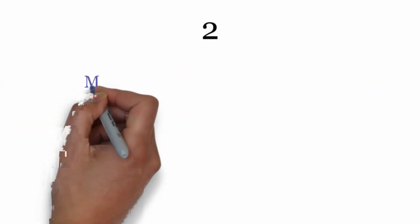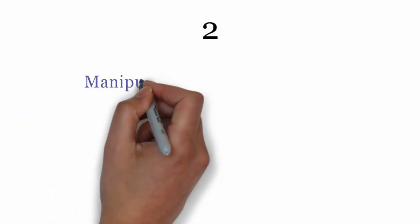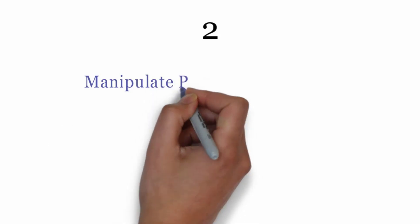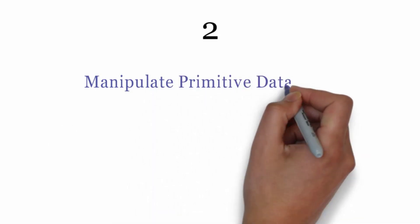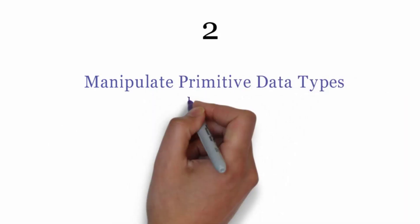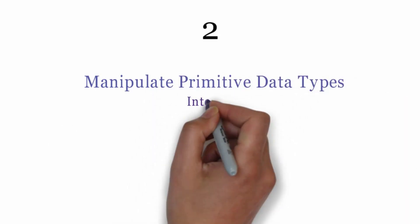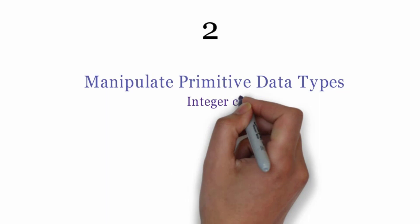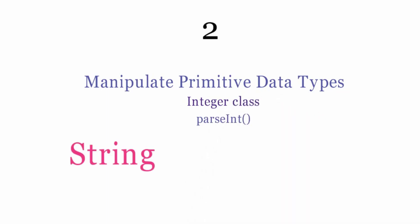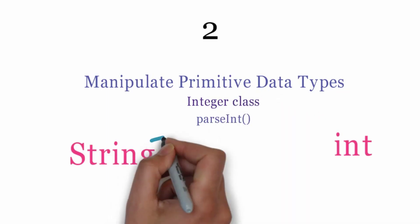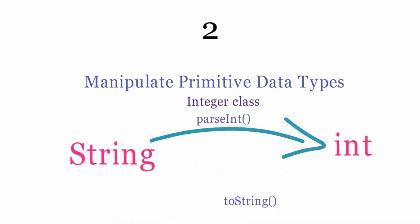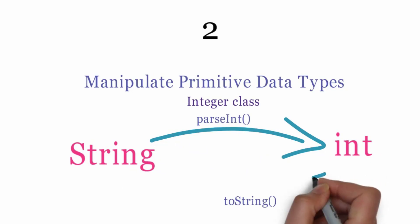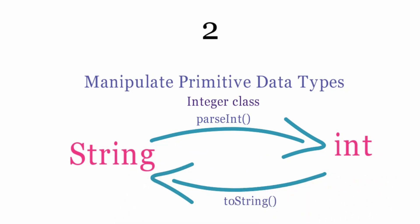Second reason is: wrapper classes provide useful methods to manipulate primitive data types. For example, the Integer class provides methods like parseInt to convert a String to an int, and toString method to convert an Integer to a String.